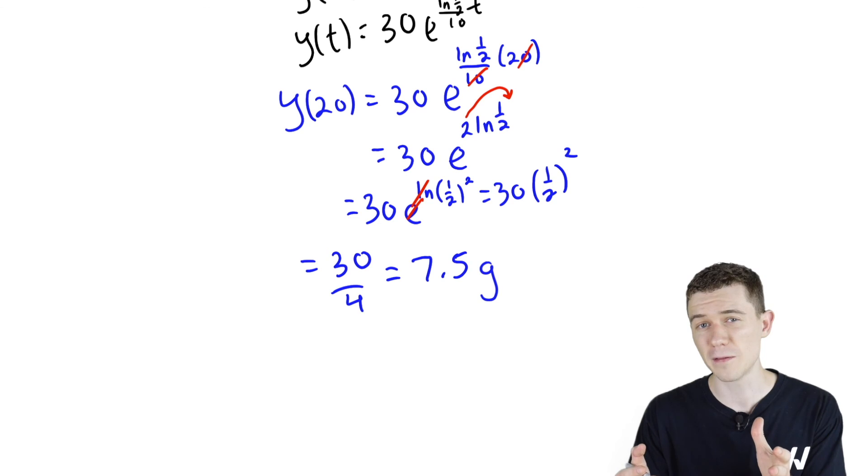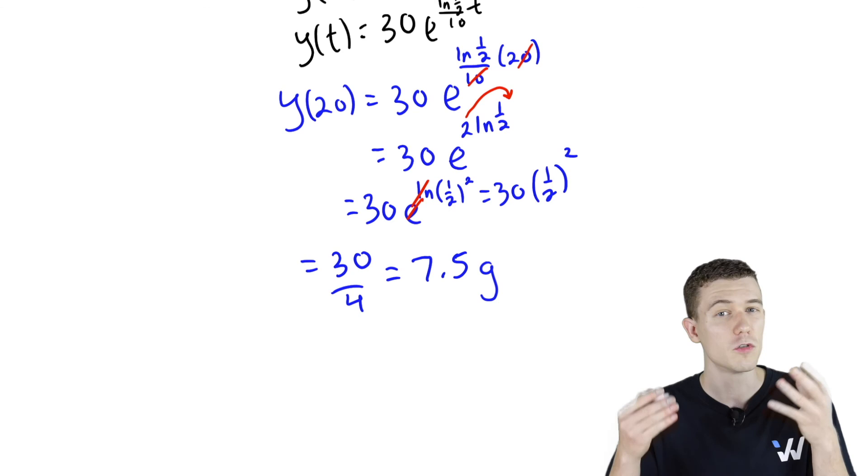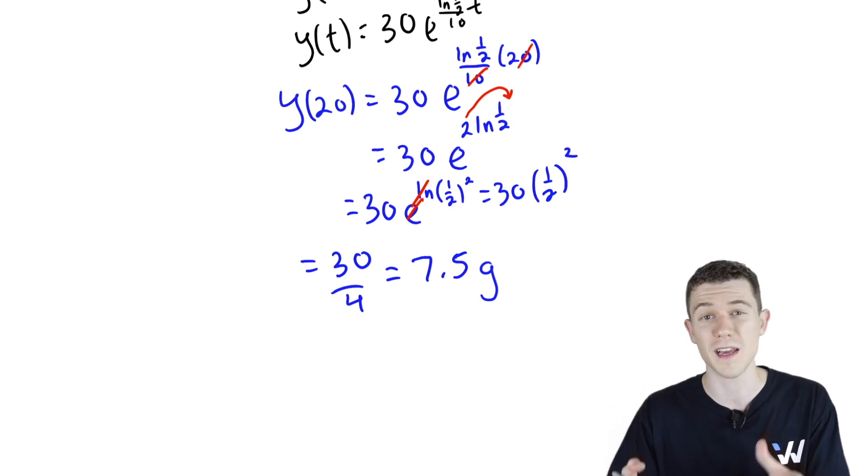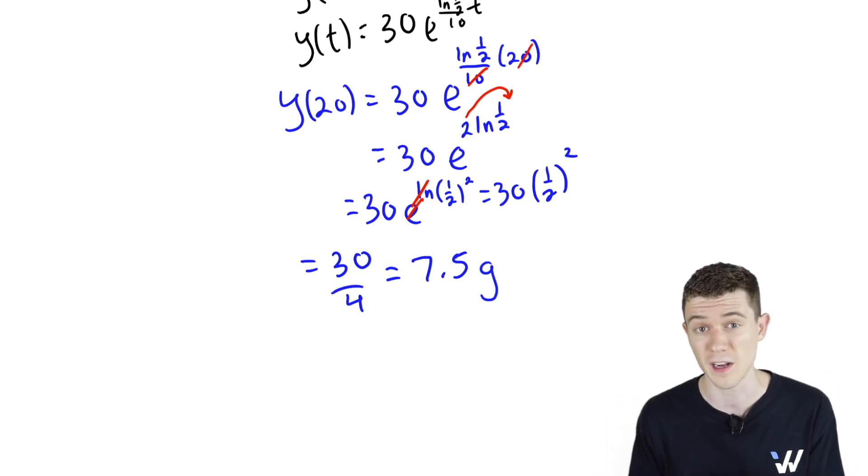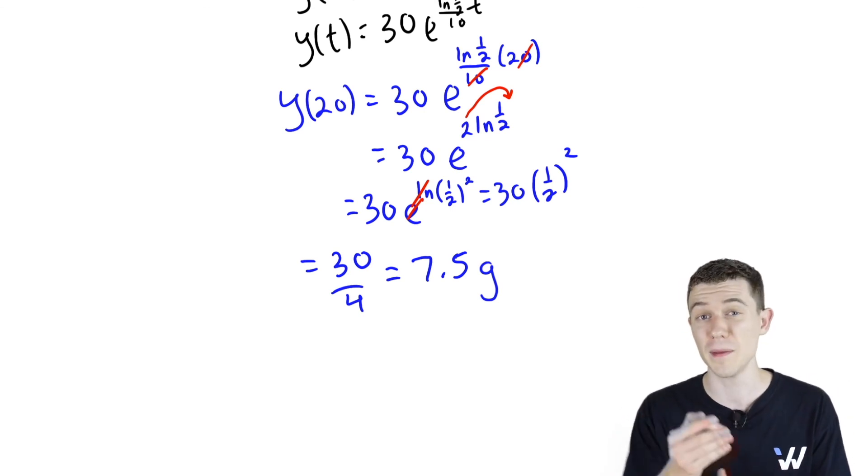There was kind of a back and forth here. We had to take the information from the question and write it in terms of our function. We had to remember the general solution for the exponential growth and decay equation. Once we plugged in our information, we could find k, that proportionality constant. Plug k back in, we could finally answer the question. This is a very common technique. It might be worth your review.